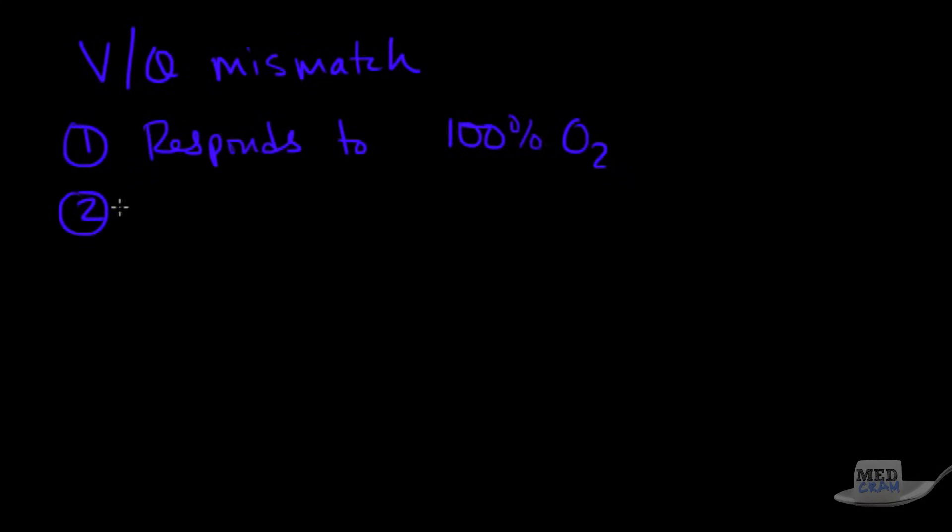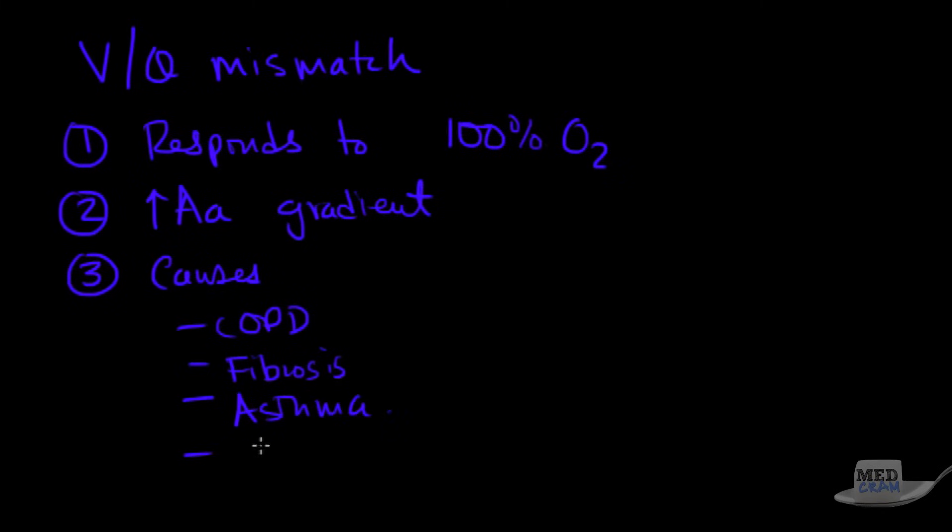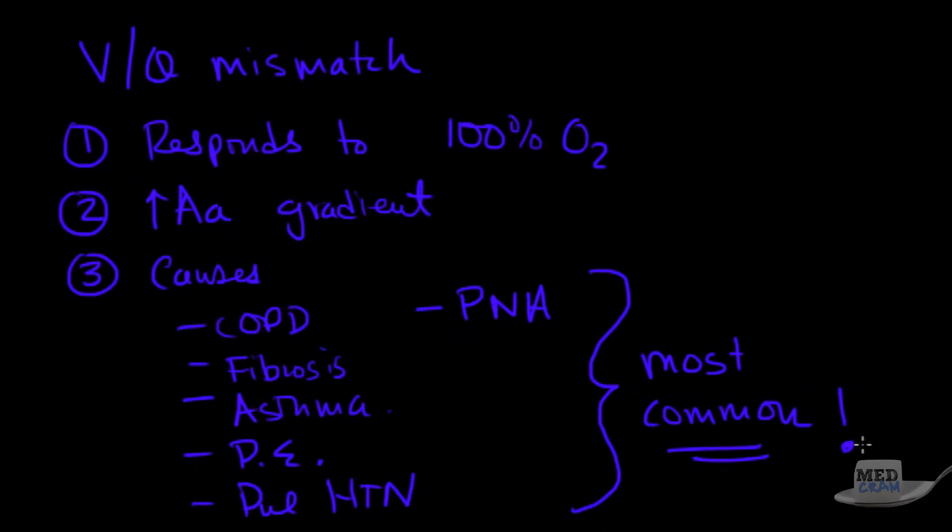Let's summarize the situation with VQ mismatch. Number one it responds to 100% O2. Remember the only one that did not respond to 100% O2 was shunting. Number two you have an increased A-a gradient. Number three the causes - here they are: COPD, you can even get fibrosis causing this, asthma, pulmonary embolism, pulmonary hypertension, and even pneumonia. As a result of all of these causes it is the most common form. Thank you for joining us.